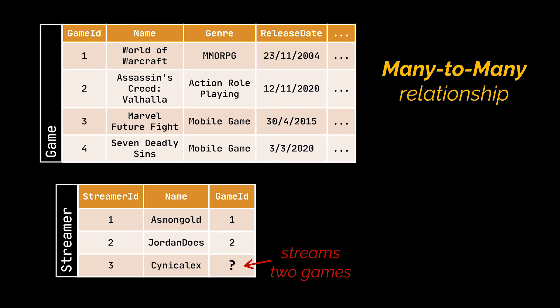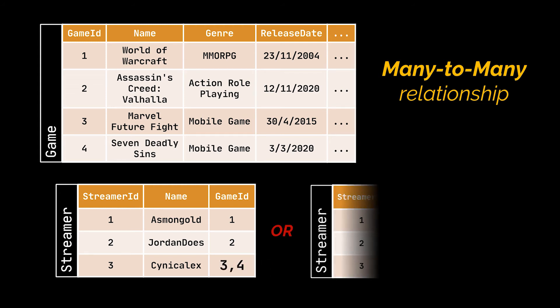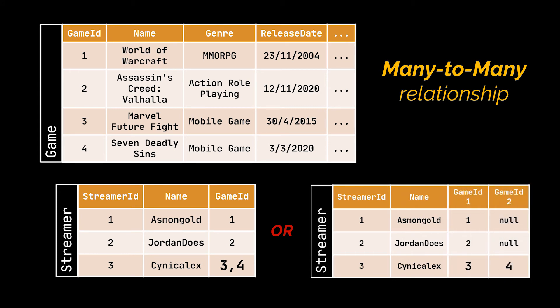This will also be the case if we try to add the streamer ID column to the game table. So how are we going to represent our many-to-many relationship? Some may add an additional column for each game or streamer, or even try to insert a comma-separated list of game IDs inside a column.